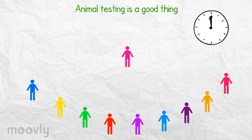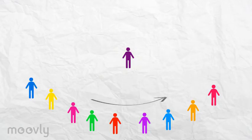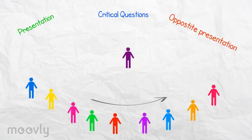When he has finished this argument, it's the next person's turn. Keep doing this until each participant has given the presentation in front of the group, answered the critical questions, and gave the opposite presentation.